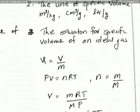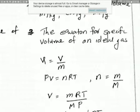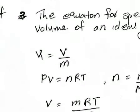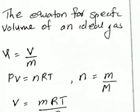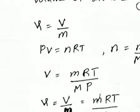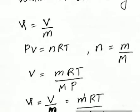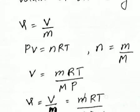For the equation of specific volume of an ideal gas, we know specific volume v (small letter v) is equal to V (capital V) divided by m (mass). We know the ideal gas equation PV = nRT. Here n is the number of moles, which equals mass in grams divided by molecular mass M. Substituting that, V = mRT / (M × P).